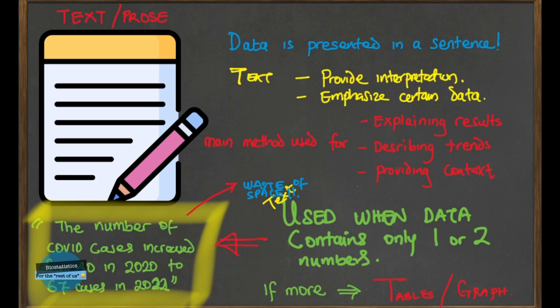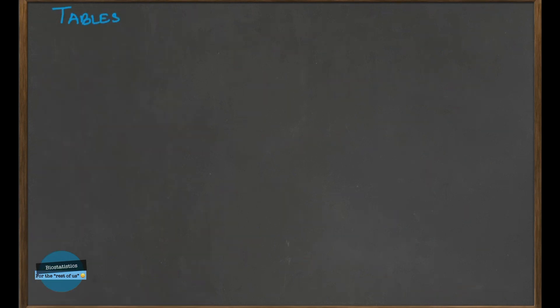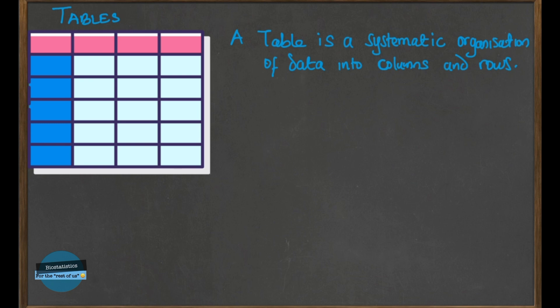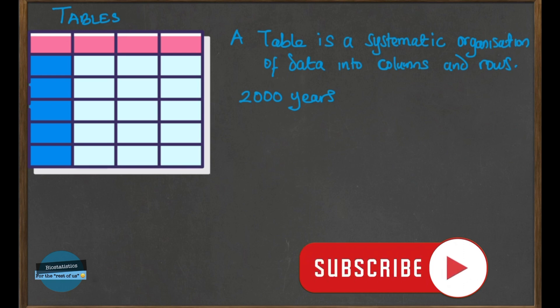In summary, text representation puts data in a sentence and is used to provide interpretation or emphasize a particular aspect of analysis. Only use it where your data contains one or two numbers. Next, we go to tabular presentation of data — when data is presented in the form of tables. Tables have been used for quite some time; a table is a systematic organization of data in rows and columns, and tables have been used for nearly 2,000 years. Anyone with a decent level of literacy can quite easily understand information presented in tabular format.